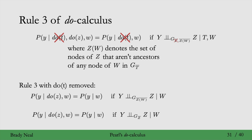So why do we have Z(W) here rather than just Z? Z(W) denotes the set of nodes of z that aren't ancestors of any node of w in the manipulated graph where edges going into t are removed. The key here is colliders. To see why, we need to consider what happens when a node in z is an ancestor of a conditioned-on node w.